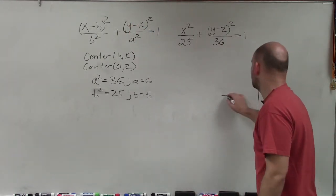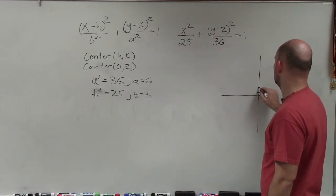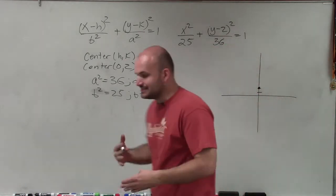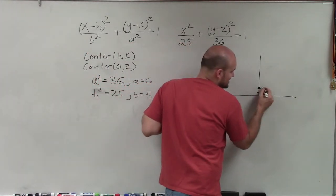So let's go ahead and graph where the center is going to be, which will be at 0 comma 2. All right? Now remember, a is the distance from the center to your vertices. So I'm starting at here's my center.